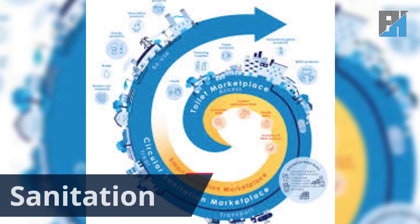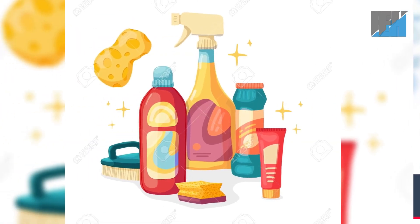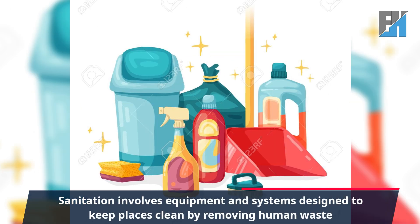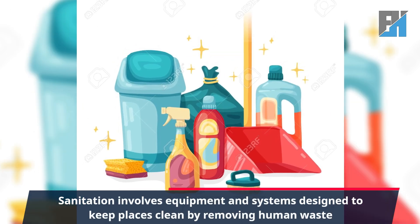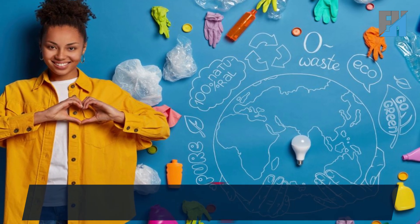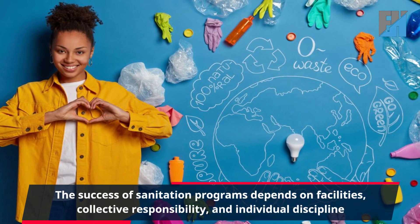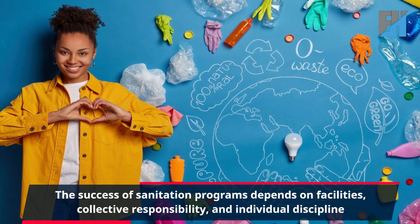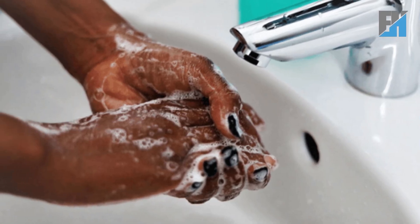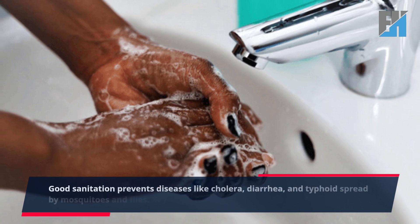In today's class we will discuss sanitation. Sanitation involves equipment and systems designed to keep places clean by removing human waste. The success of sanitation programs depends on facilities, collective responsibility, and individual discipline. Good sanitation prevents diseases like cholera.